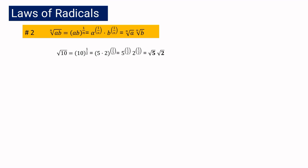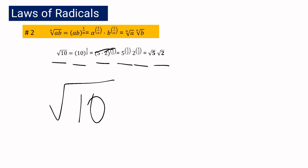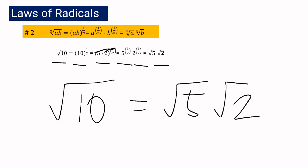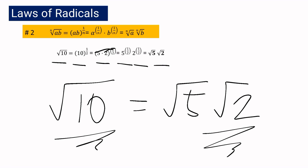For example, if we have square root of 10, it can be written as 10 raised to 1 half. 10 can be factored as 5 times 2. Distributing the exponent, we get 5 raised to 1 half and 2 raised to 1 half, which can be written as square root of 5 and square root of 2. This means square root of 10 is equal to square root of 5 multiplied by the square root of 2 — these two expressions are just the same.